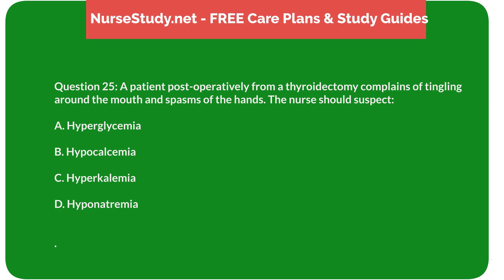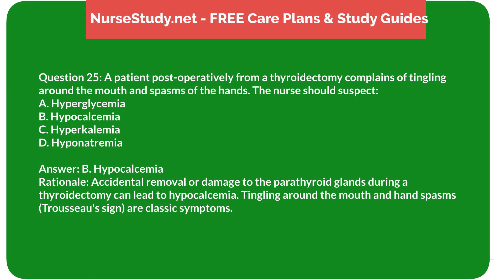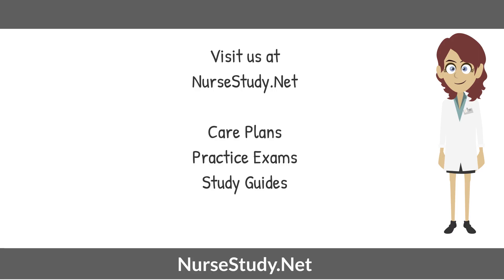Question 25: A patient post-operatively from a thyroidectomy complains of tingling around the mouth and spasms of the hands. The nurse should suspect: A) Hyperglycemia, B) Hypocalcemia, C) Hyperkalemia, D) Hyponatremia. Answer: B, Hypocalcemia. Rationale: Accidental removal or damage to the parathyroid glands during a thyroidectomy can lead to hypocalcemia. Tingling around the mouth and hand spasms (Trousseau's sign) are classic symptoms. Visit nursestudy.net for more nursing practice exams, care plans, and study guides.